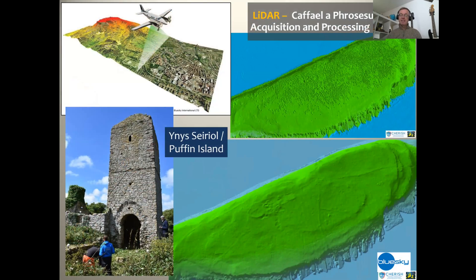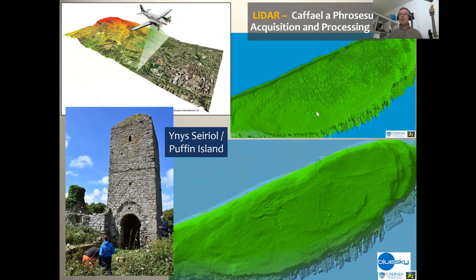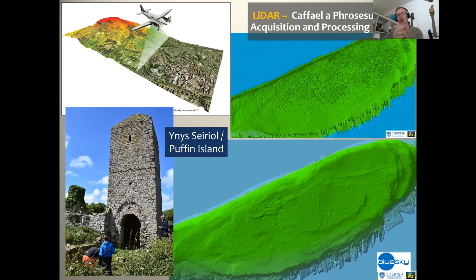Airborne laser scanning — LIDAR — is a particularly powerful method for recording the landscape. In our CHERISH project we commissioned new airborne laser scanning of six of the Welsh islands in 2017, and Puffin Island off the Anglesey coast is an example. It has a 12th century church tower and an early medieval monastery, but most of the island is heavily wooded so you can't really see the archaeology from the air. With 25 centimetre LIDAR survey, the laser scanning from the airplane can penetrate woodland and vegetation to show what's underneath on the ground. We can strip off that woodland on Puffin Island and reveal underneath it the remains of the early medieval monastery and later church, field boundaries and cultivation that nobody's ever seen before. LIDAR is a very powerful method — we'll see some examples in the Gwent Levels area.